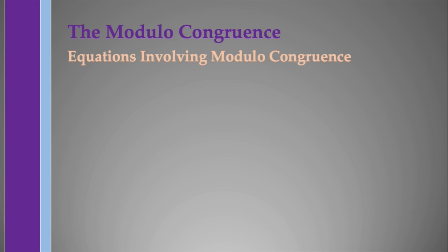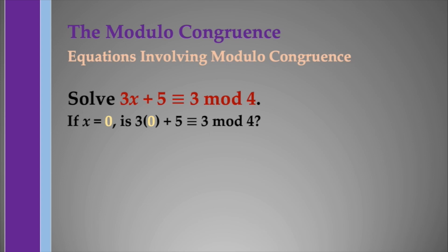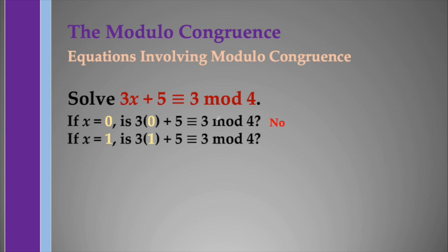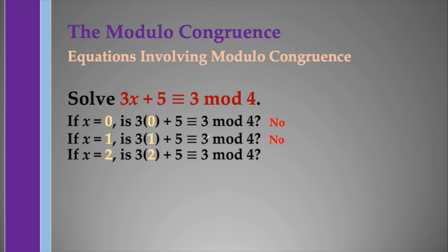Now let's have equations involving modulo congruence. Suppose we have 3x plus 5 is congruent to 3 at modulo 4. To solve this, we try different values of x. When x equals 0: is 5 congruent to 3 modulo 4? No. When x equals 1: is 8 congruent to 3 modulo 4? No. When x equals 2: is 11 congruent to 3 modulo 4? Yes — 11 is congruent to 3 at modulo 4.